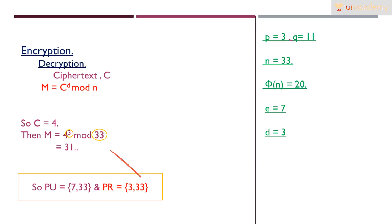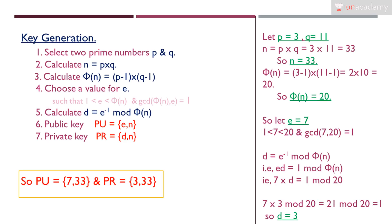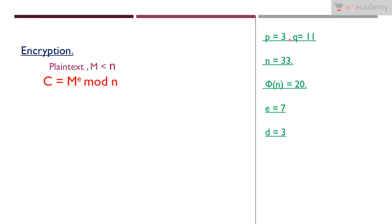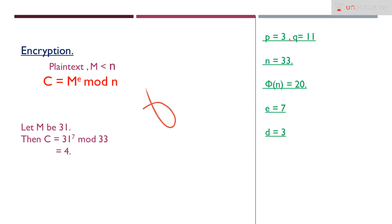In summary, for RSA key generation: choose prime numbers P and Q, calculate n = P × Q, calculate φ(n) = (P−1)(Q−1), choose e between 1 and φ(n) that is co-prime to φ(n), then calculate d as the multiplicative inverse of e mod φ(n) to get the public key (e, n) and private key (d, n). Remember that the message m must be less than n. In practice, P and Q should be very large so that n is also very large, ensuring high security.